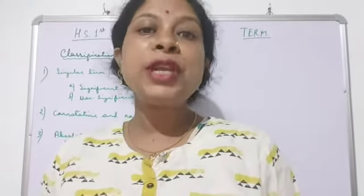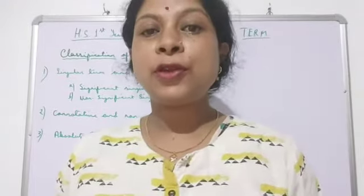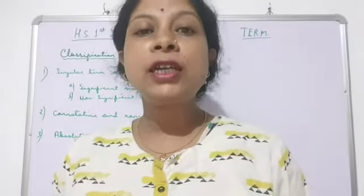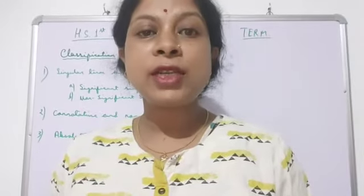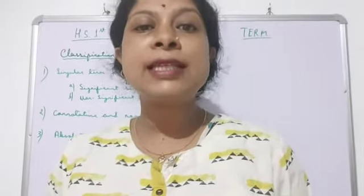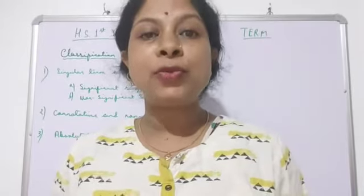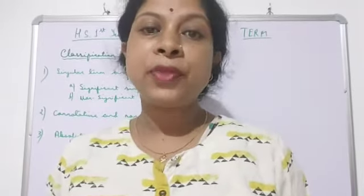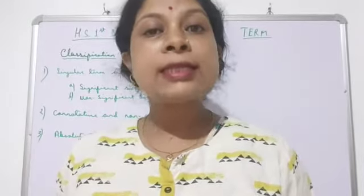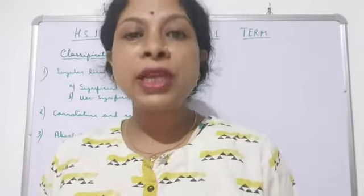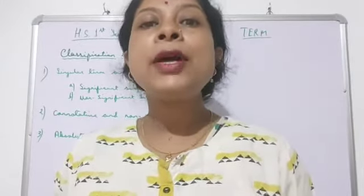To be used as a subject or predicate of a given proposition, a term should have its own meaning — it should not be dependent on any other word. For example, in 'Rosie is a beautiful girl', 'Rosie' is a term and 'beautiful girl' is also a term. However, words like 'is', 'a', 'the' are not terms because they have no meaning of their own — they get meaning only when used with some other word.